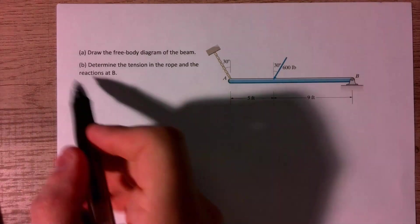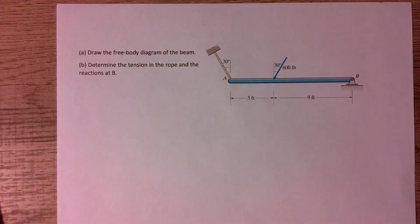So in order to do part B, we're actually going to need to do part A first, and that's kind of the good first step in any statics problem to draw the free body diagram first, so that's what we're going to do.